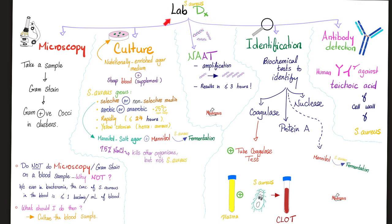Diagnosis of staph aureus: microscopy — use gram stain, you'll see them clustering and appearing purple because they are gram-positive. Culture: staph can grow on selective or non-selective media. Non-selective is basic blood agar. Selective is mannitol salt agar — because staph can ferment mannitol, and sodium chloride kills other contaminants, leaving staph alone for identification.